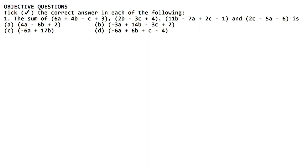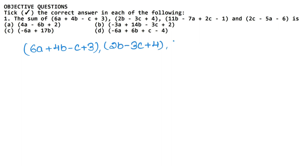Let's write our values. We have to take the sum of: 6a plus 4b minus c plus 3; 2b minus 3c plus 4; 11b minus 7a plus 2c minus 1; and 2c minus 5a minus 6.